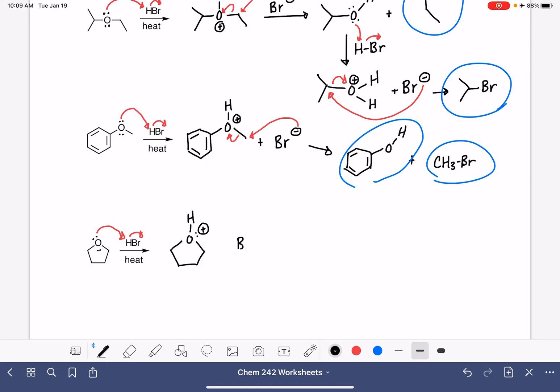And then we're going to attack one of those carbon atoms with the bromine. You can attack either one of the carbon atoms. I'm going to choose the one that's close and break that carbon-oxygen bond.